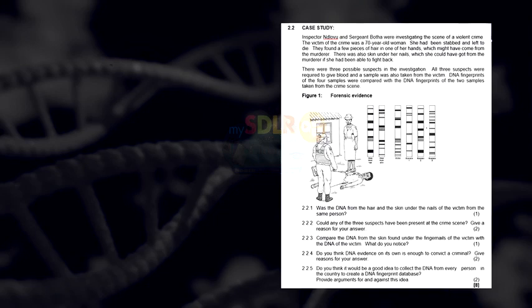There were three possible suspects in this investigation. All three suspects were required to give blood, and a sample was also taken from the victim. DNA fingerprints of the four samples were compared with the DNA fingerprints of the two samples taken from the crime scene. Here we have DNA from the hair, DNA from the skin, the victim, and the three suspects.